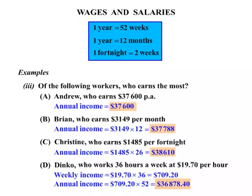Now that we have all four annual incomes, we can compare them. We can see that Christine comes out on top at $38,610. So Christine is the answer to the question.